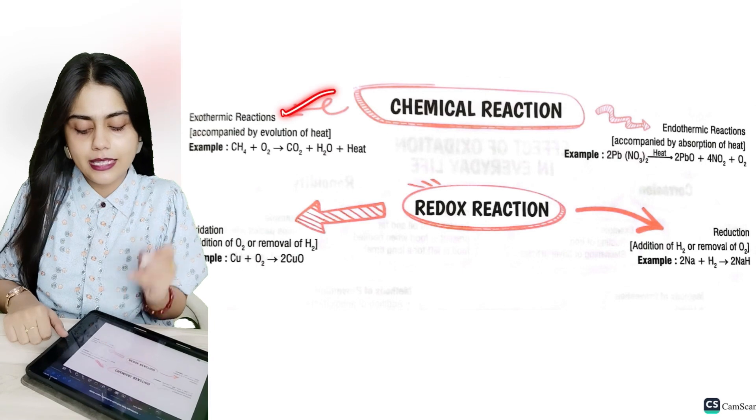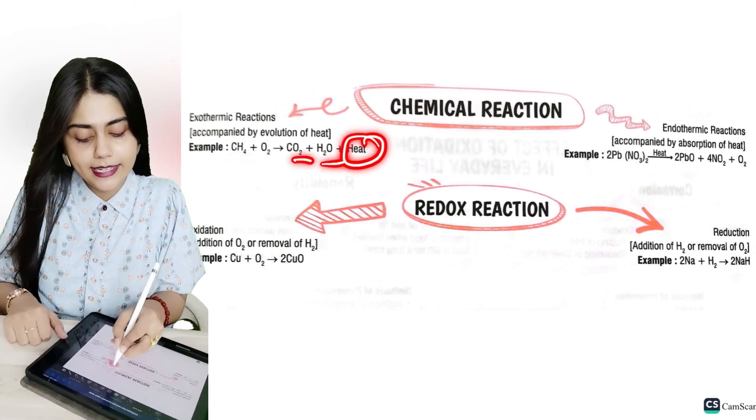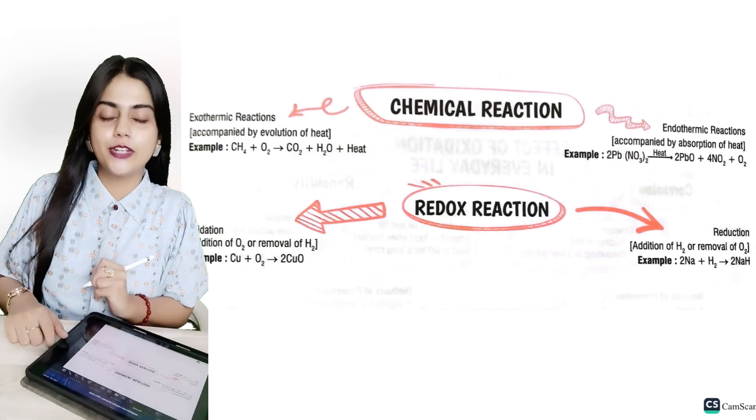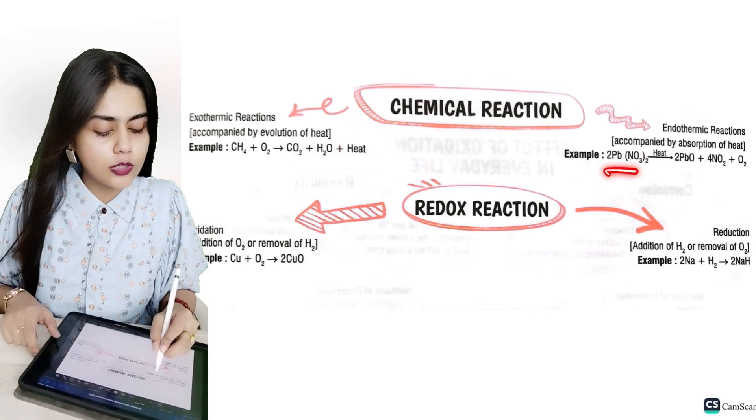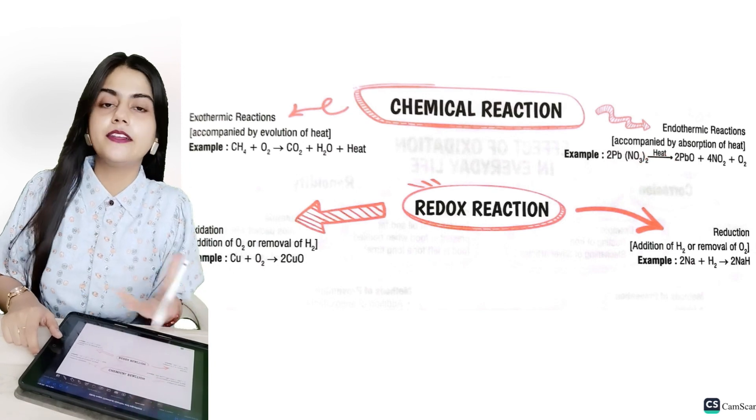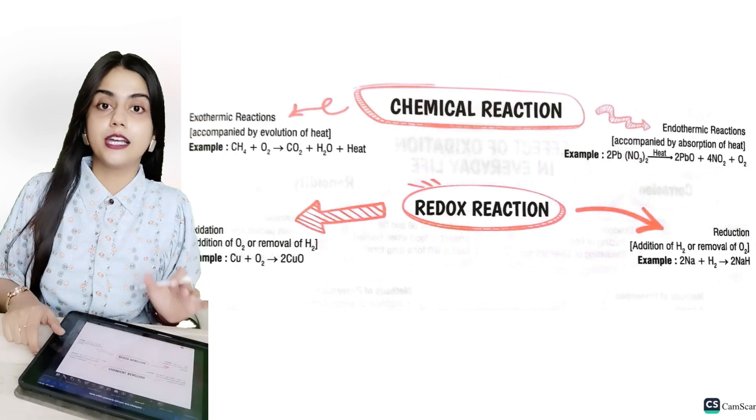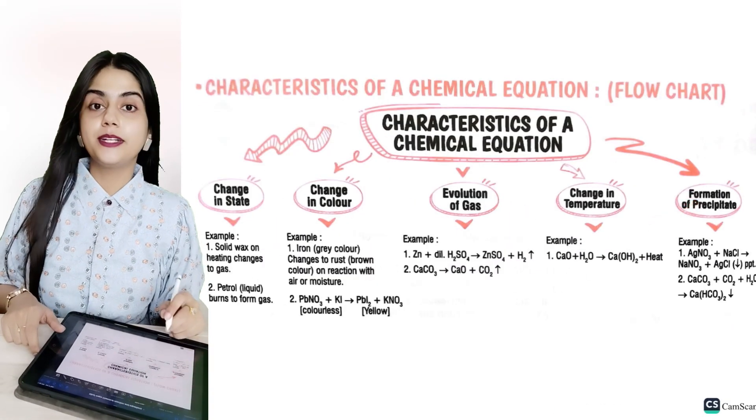This example of CH4 plus O2, it gives CO2, H2O, and the heat is coming out. Endothermic reaction, we have put heat on this arrow and we give heat to the chemical reaction to perform. 2PbO gives Pb3O4 plus O2 is coming out.